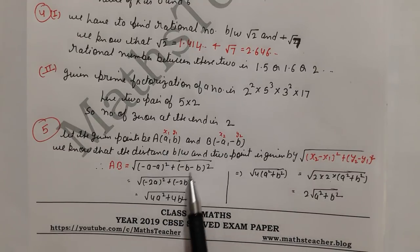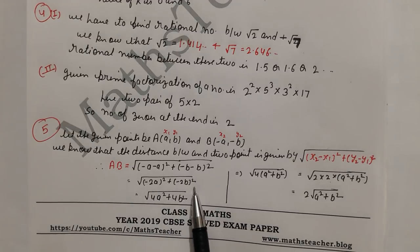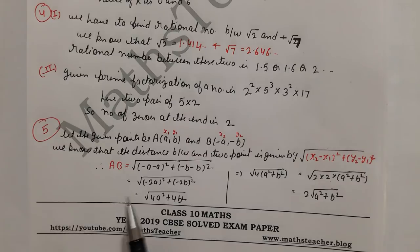We have (-a, -b) and (a, b). So (a - (-a))² + (b - (-b))². This gives (2a)² + (2b)² = 4a² + 4b².